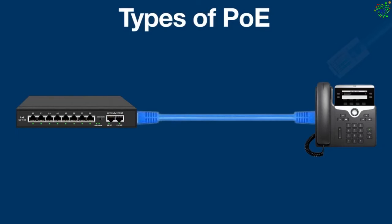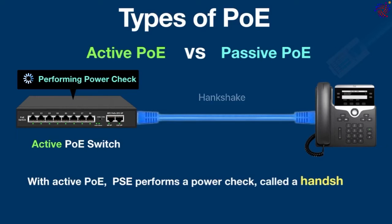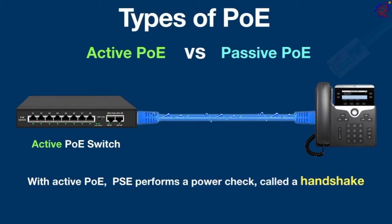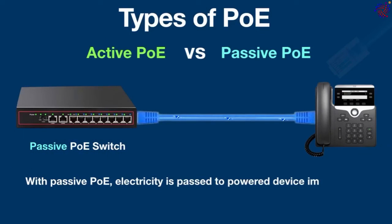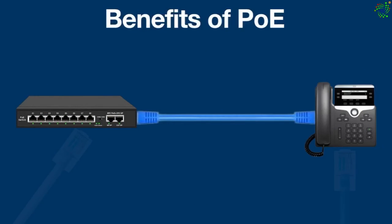Power over Ethernet has two types: active and passive. Active PoE provides a safety mechanism for power devices — the PSE performs a power check called a handshake before power is delivered. If the handshake is completed, the PoE switch starts sending power, which triggers the power device to start up. If the handshake is not completed for any reason, the PSE never sends power, so there is no danger of power devices being damaged. With passive PoE, electricity is passed to power devices immediately without a compatibility check, constantly sending electrical current to the connected device — which means it can permanently damage a device.